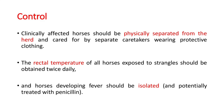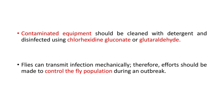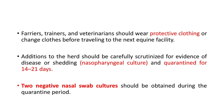Purpura hemorrhagica most often occurs as a rare complication of Streptococcus equi infection but can also develop after infection with other bacterial and viral organisms. Regarding control: clinically affected horses should be physically separated from the herd and cared for by separate caretakers wearing protective clothing. Rectal temperature of all exposed horses should be obtained twice daily, and horses developing fever should be isolated and potentially treated with penicillin. Contaminated equipment should be cleaned with detergent and disinfected using chlorhexidine gluconate or glutaraldehyde.